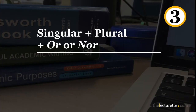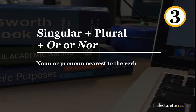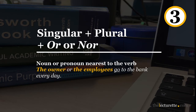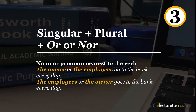Number three: when a compound subject contains both a singular and a plural noun or pronoun joined by OR or NOR, the verb should agree with the part of the subject that's nearest to the verb. So: 'The owner or his employees go to the bank every day.' OR: 'The employees or the owner goes to the bank every day.'